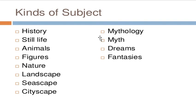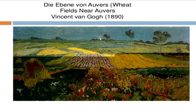A good example of a source of art for nature is a wet field near Auvers, painted by Vincent Van Gogh in 1890. The name of the painting is 'The Plain of Auvers' or 'Wet Fields Near Auvers.'